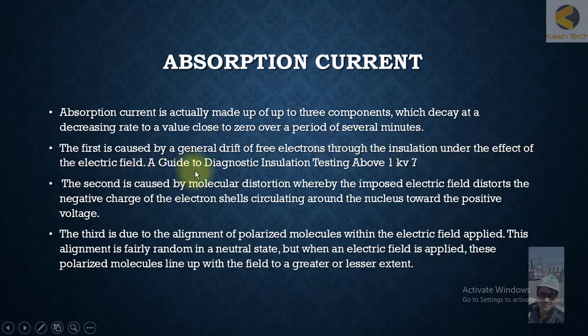The first is caused by general drift of free electrons through the insulation under the effect of electric field. The second is caused by molecular distortion whereby the imposed electric field distorts the negative charge of the electron shell circulating around the nucleus towards the positive voltage. The third is due to the alignment of polarized molecules within the electric field applied. This alignment is fairly random in neutral state, but when an electric field is applied, these polarized molecules line up with field to a greater or lesser extent.